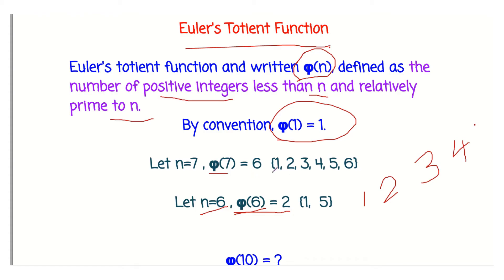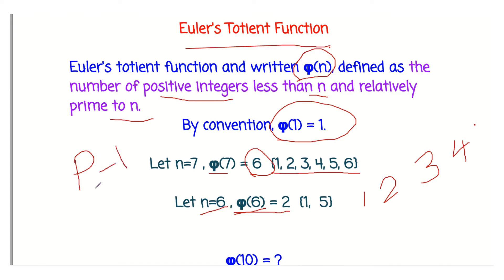Since 7 is a prime number, φ(7) = n - 1 = 6. For any prime number p, φ(p) = p - 1, that is n - 1. This is the key property of the Euler's Totient Function for prime numbers.